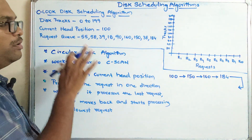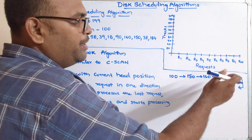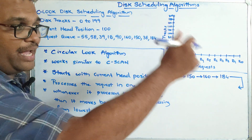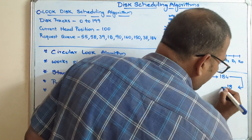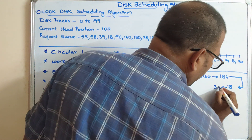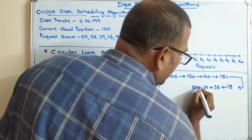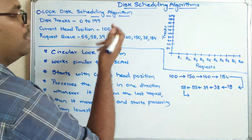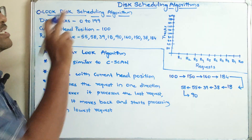Immediately after reaching 184, instead of reversing like in LOOK disk scheduling, it directly goes to the lowest request. The lowest request here is 18, so it immediately moves to 18. After 18 it moves forward again: 18 → 38 → 39 → 55 → 58.